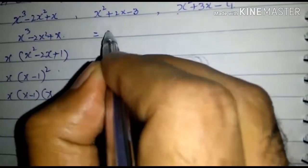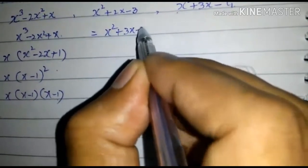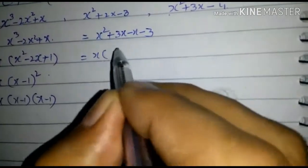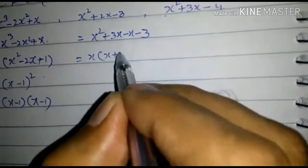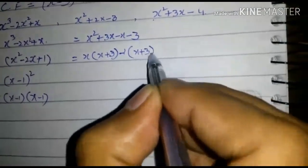This equals x² + 3x - x - 3. x is common here giving x(x + 3), and minus 1 is common here giving -1(x + 3).